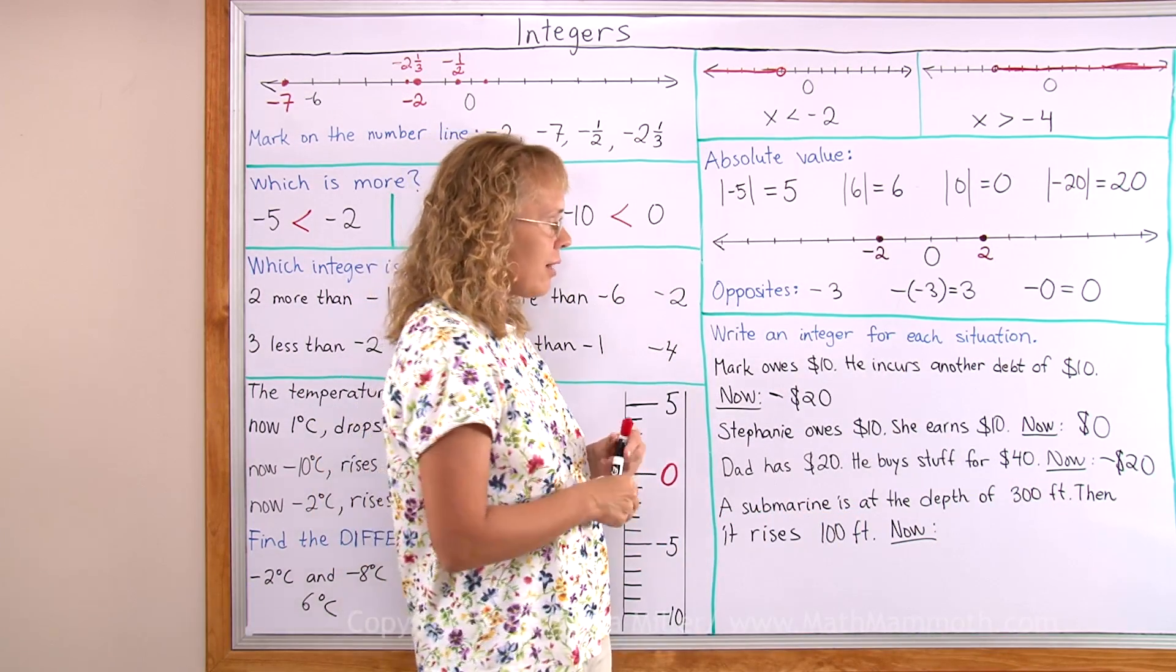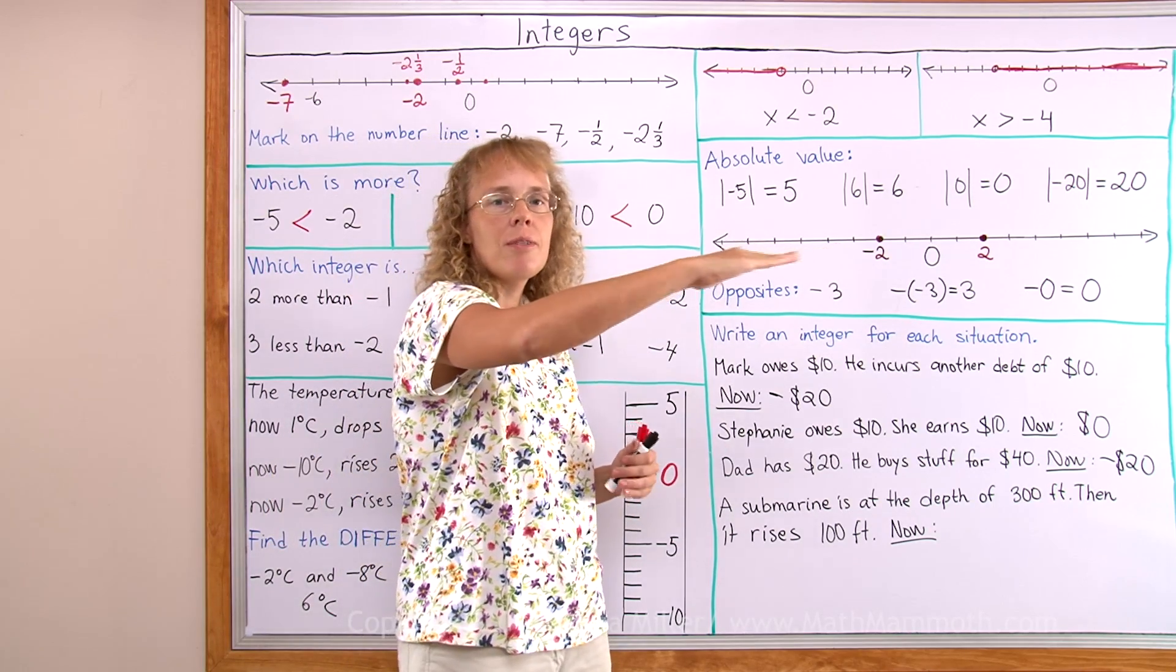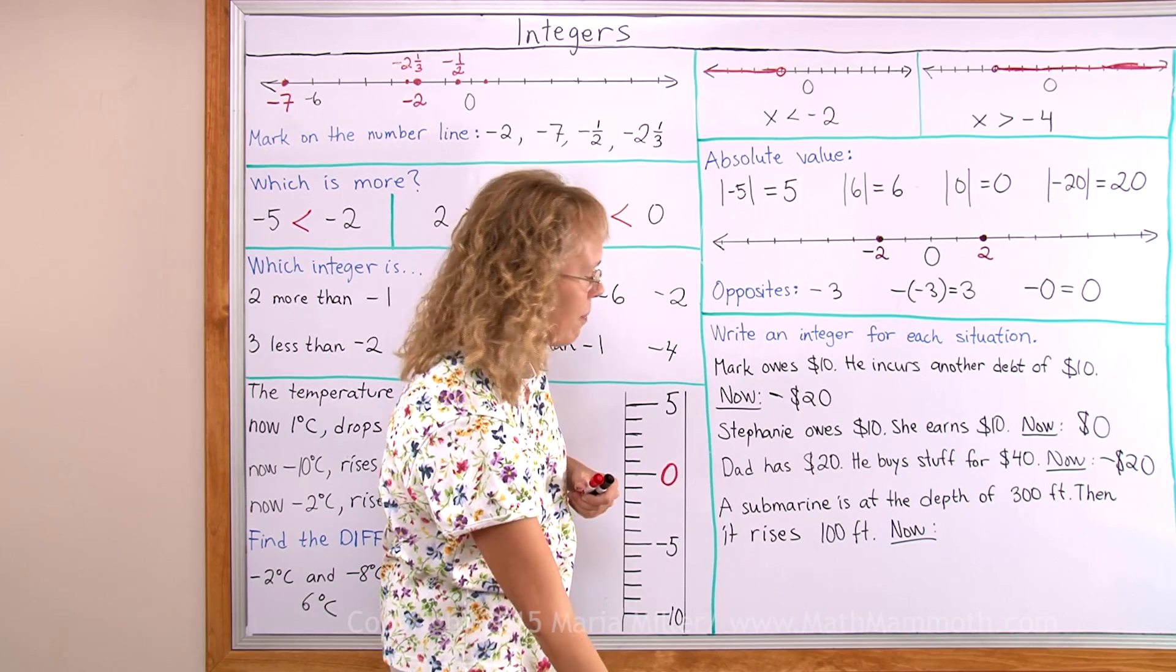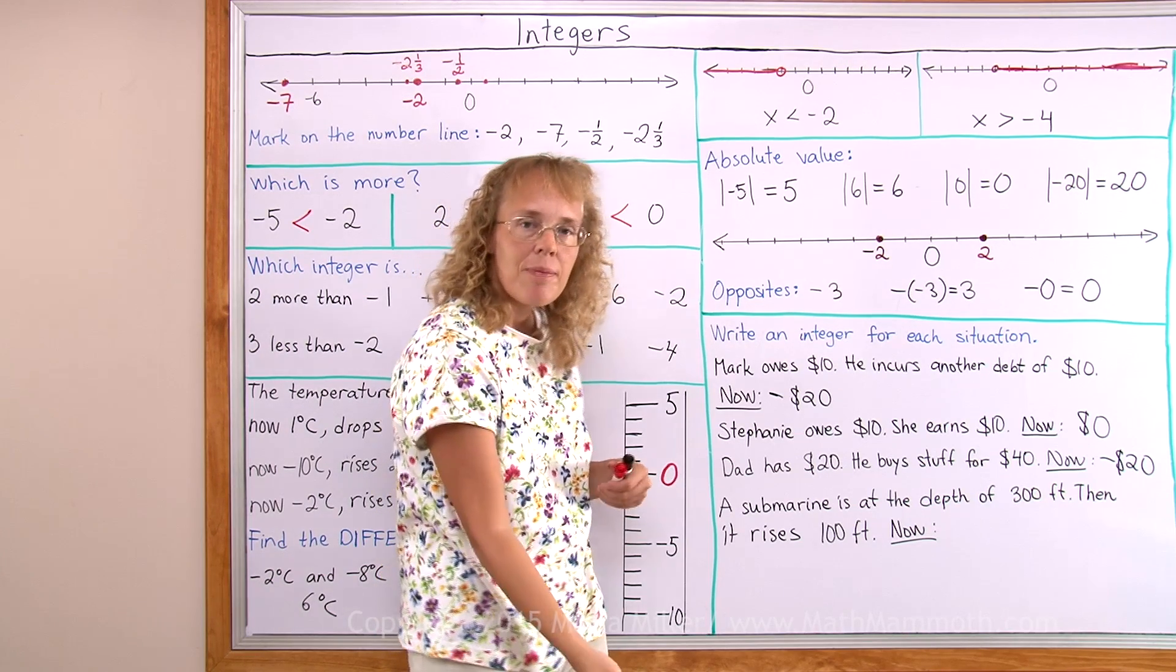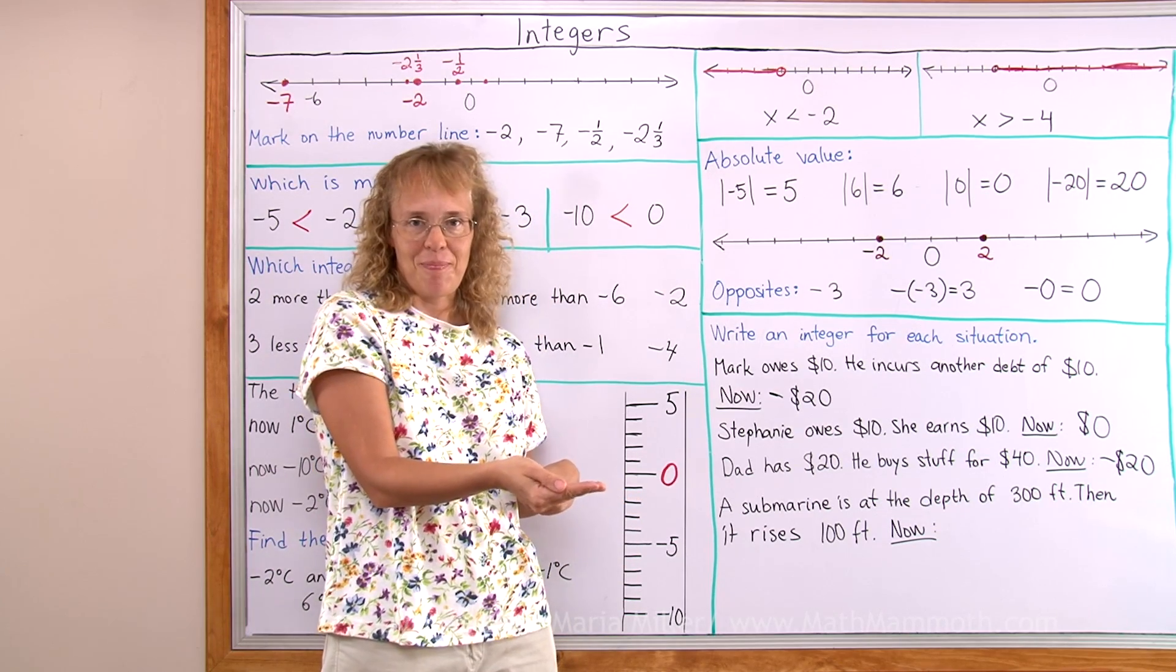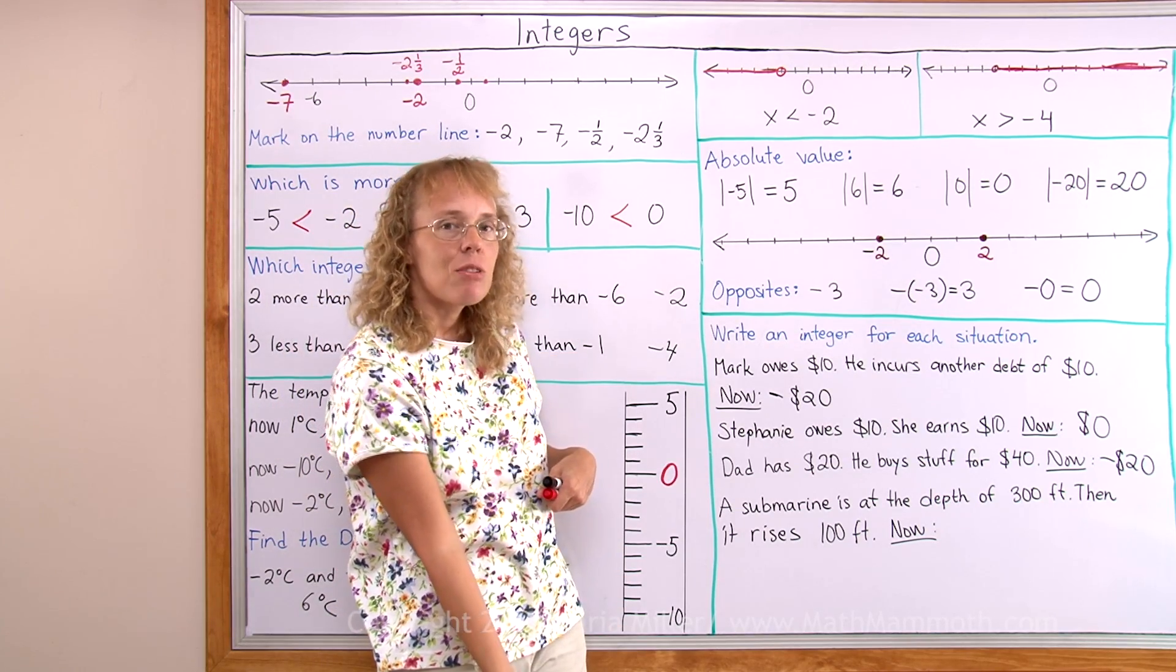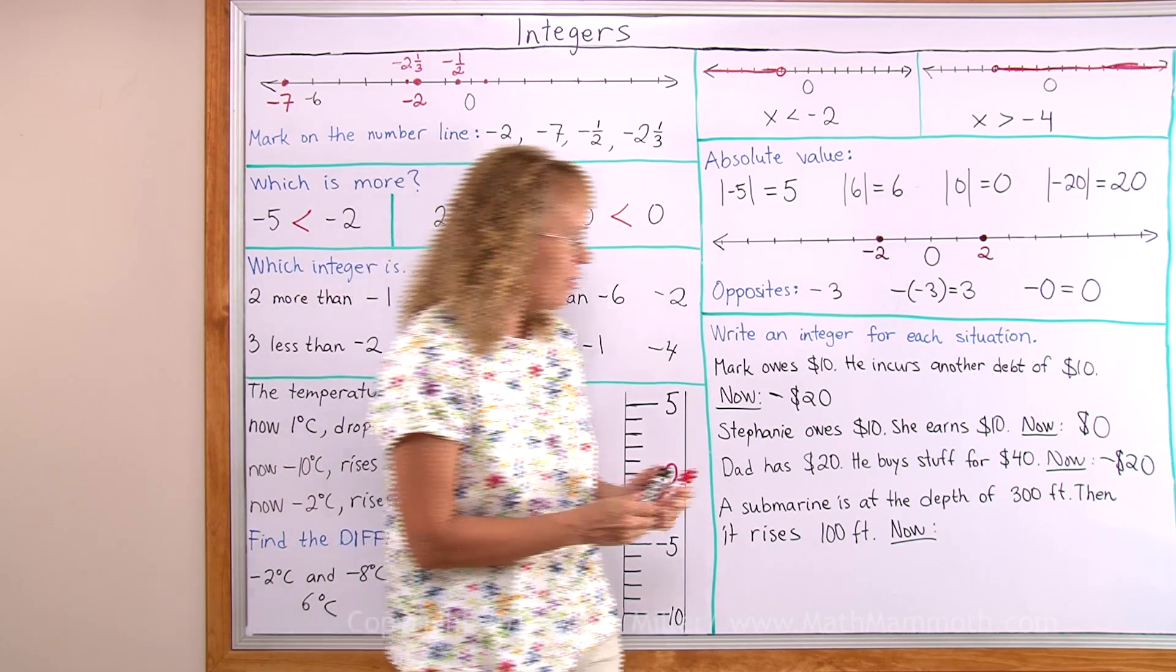A submarine is at the depth of 300 feet. That means if here was the surface of the water, a submarine is of course under it, below it, 300 feet below it. And so it's somewhere down there. And it rises 100 feet. It comes up 100 feet. So what is its elevation now? At first its elevation was negative 300 feet. It rose 100 feet. So right now its elevation is just negative 200 feet.